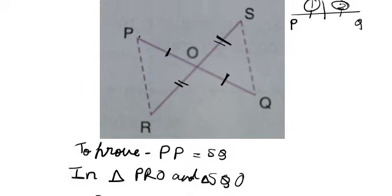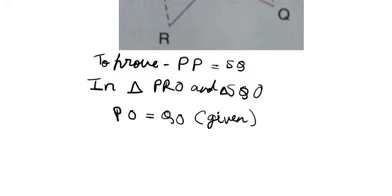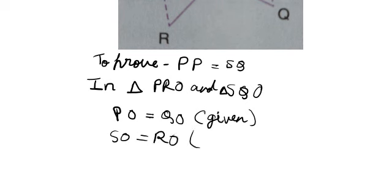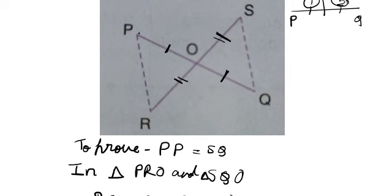Second, SO equals RO, for the same reason — bisecting. This is also given in the question. Now we look at the two angles that will be equal. We have studied about vertically opposite angles — whenever two lines are intersecting, these two angles will be equal and these two will be equal as well. Opposite angles are always equal when two lines are intersecting.